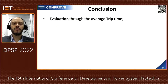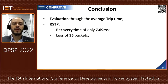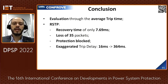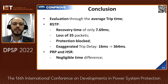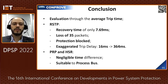As the conclusion for this paper, we performed the evaluation through trip times. In the RSTP case, the recovery time was 7.69 milliseconds — 35 sampled value frames were lost, resulting in protection being blocked, with an exaggerated trip delay difference from 16 to 364 milliseconds without and with contingencies. In the PRP and HSR case, there was a negligible time difference, leading to the conclusion that these protocols are more suitable for the process bus. Thank you.